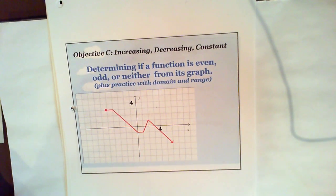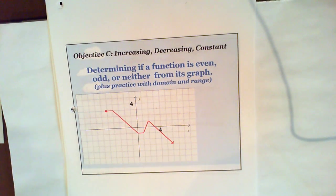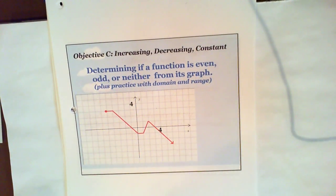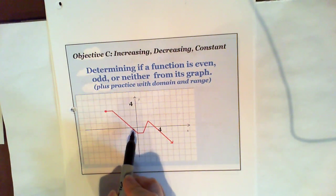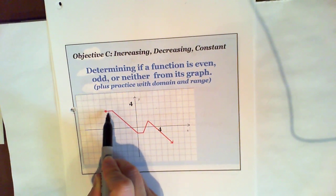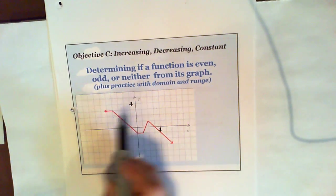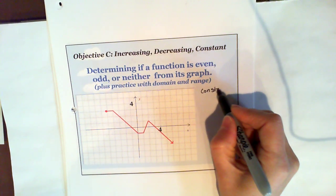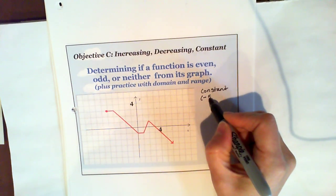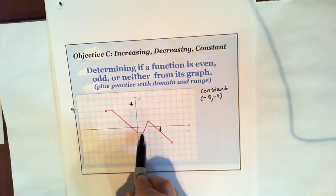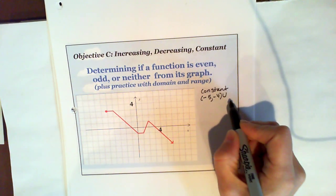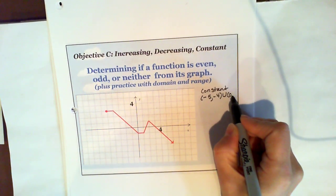There's another example here. We want to determine if this one is even, odd, or neither from the graph. We can also talk about domain and range, and we could talk about increasing and decreasing too. So it's constant here — from negative five until negative four, it's constant. We can write it that way: negative five to negative four, it's constant. And then you can see it's also constant here from the x value of zero to one. So I'm going to join those two intervals with a union — from zero to one.